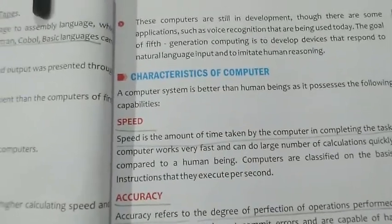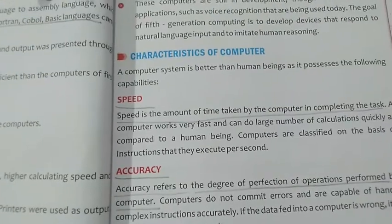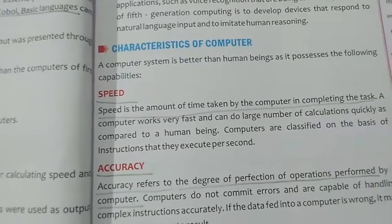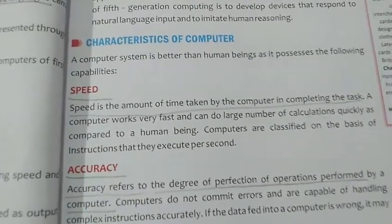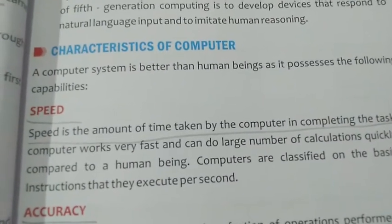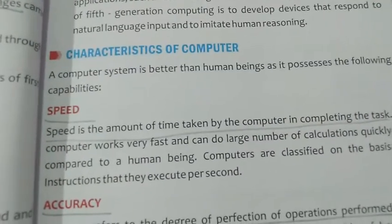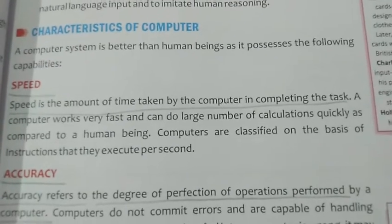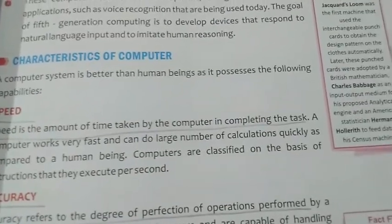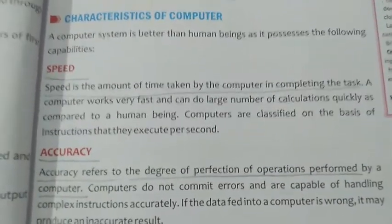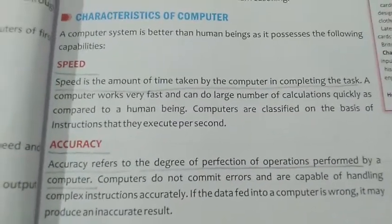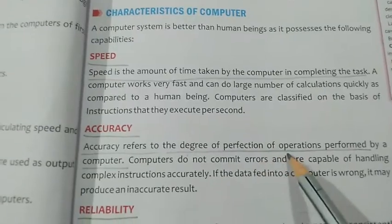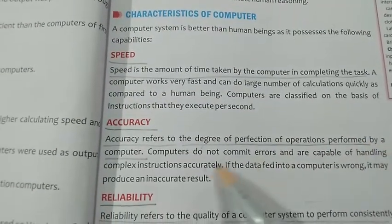Now we come to the characteristics — the important features of a computer. First is speed. Computers can do any calculations very quickly; within a few seconds they can do a big calculation. Speed is the amount of time taken by a computer in completing a task. Next is accuracy, which refers to the degree of perfection of operations performed by a computer — the answer a computer gives is always correct.